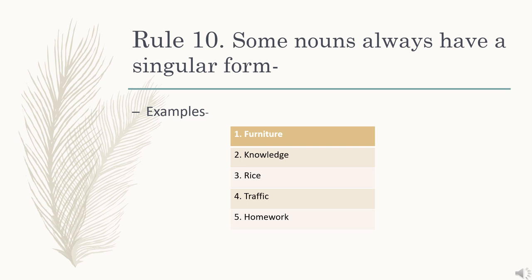Rule number 10: some nouns always have a singular form. This rule is just the opposite of rule number 8. According to this, some nouns always count as a singular noun. For example: furniture, knowledge, rice, traffic, homework, etc.